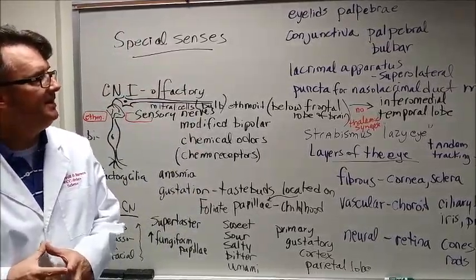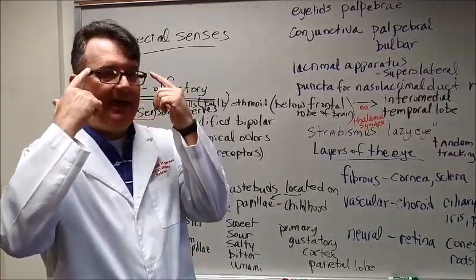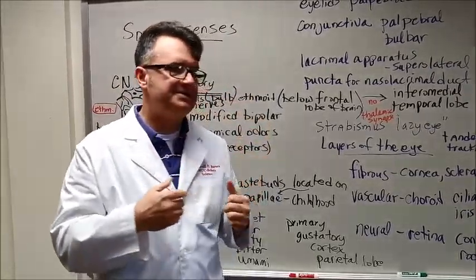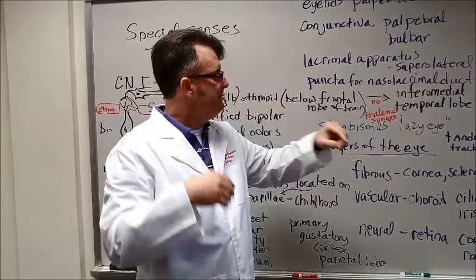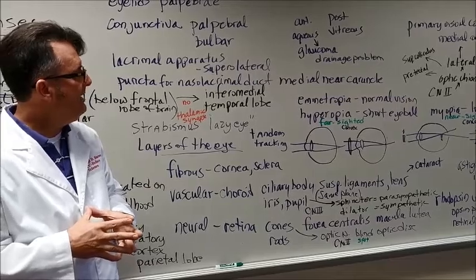When we think about the eyelids, these are called palpebri. There is a conjunctiva, a lining on the inside of the eyelids called the palpebral conjunctiva. And the bulbar conjunctiva goes exactly over the eye itself. There is a lacrimal apparatus in the superolateral aspect of the eye.